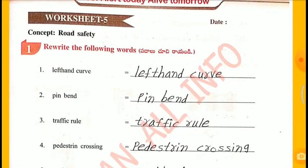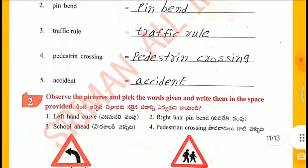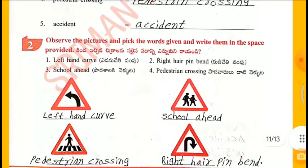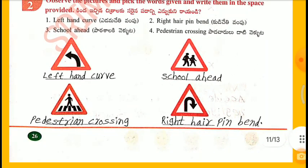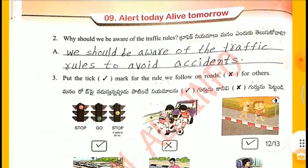Worksheet 5 - Road Safety. Derate the following words: Left hand curve, Pin bend, Traffic roll, Pedestrian crossing, Accident. Why should we be aware of the traffic rules? We should be aware of the traffic rules to avoid accidents. Put a tick mark for the rules we follow on roads: Walking on footpath - right. 2nd one - wrong. 3rd one - right. Walking on footboard - wrong. Jumping from a moving bus - wrong. Crossing on zebra crossings - right. Wearing seatbelt - right. Travelling on footboard of bus - wrong. Wearing helmet - right. Putting hands outside from the bus - wrong.